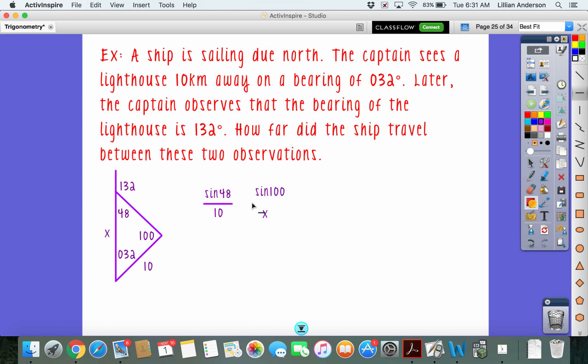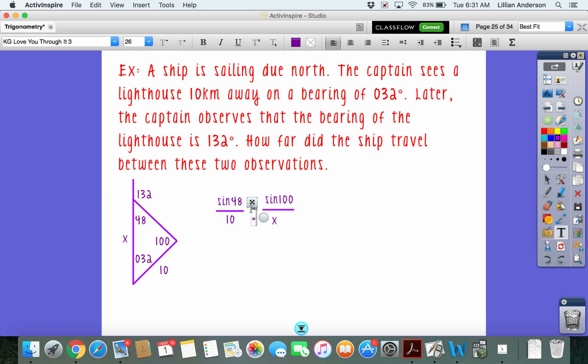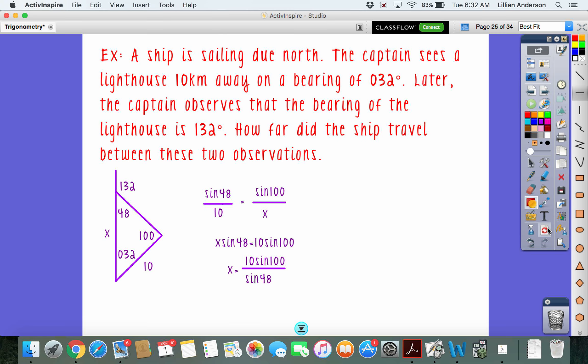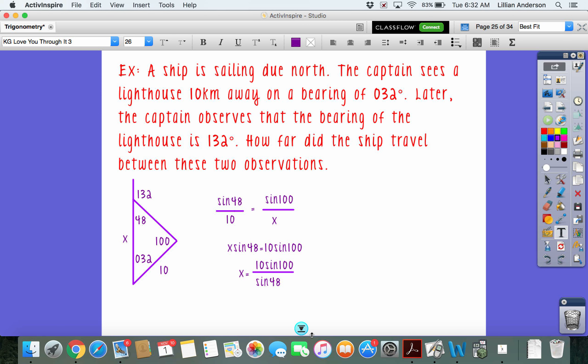So now, to solve this, we just go ahead and cross multiply, and we'll get X sine 48 equals 10 sine 100. And then to solve for X, we're going to divide both sides by sine of 48. So our answer is 10 sine 100 over the sine of 48. We want to make sure again that we're in degree mode. And so when we type it in, we get 13.3 kilometers.